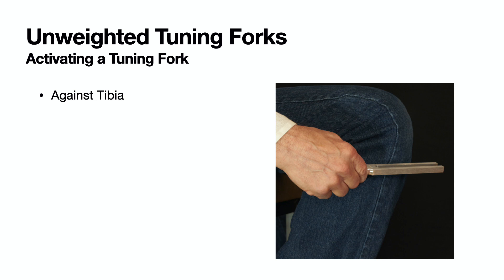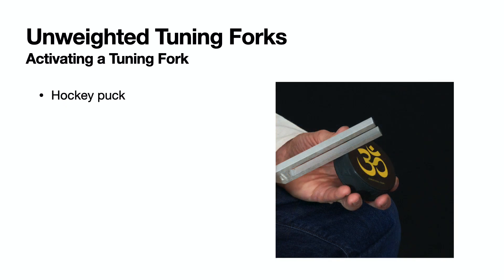If I am sitting, I'll activate an unweighted tuning fork by tapping against my tibia. I usually tap about one-third from the top of the fork. If I am standing, I will use a puck. I keep the puck in my pocket to muffle the sound of the fork against the puck. I do this to preserve the quiet space I'm trying to create.